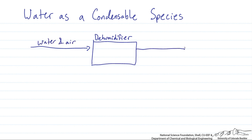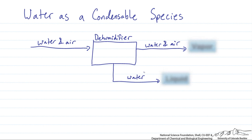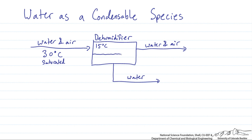Coming out we have a stream of water and air, but we've condensed out some of the water from the air. For the sake of this dehumidifier, the water and air comes in at 30 degrees C and it's saturated with water. The dehumidifier operates at 15 degrees C on the inside, and we can think of it as having a water phase of condensed water and a gas phase.